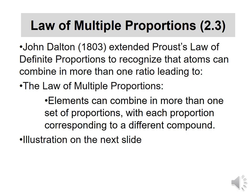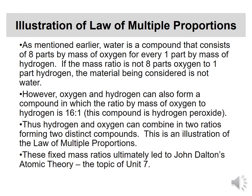The Law of Multiple Proportions, developed by John Dalton, extends the Law of Definite Proportions: sometimes elements can combine in more than one ratio, each corresponding to a different compound. For example, water is H₂O and hydrogen peroxide is H₂O₂. The oxygen-to-hydrogen mass ratio in water is 8:1, while in hydrogen peroxide it is 16:1 — simple whole-number ratios. These are two very distinct compounds. This fixed-mass-ratio concept ultimately led to Dalton's atomic theory, which will be our topic in Unit 7.